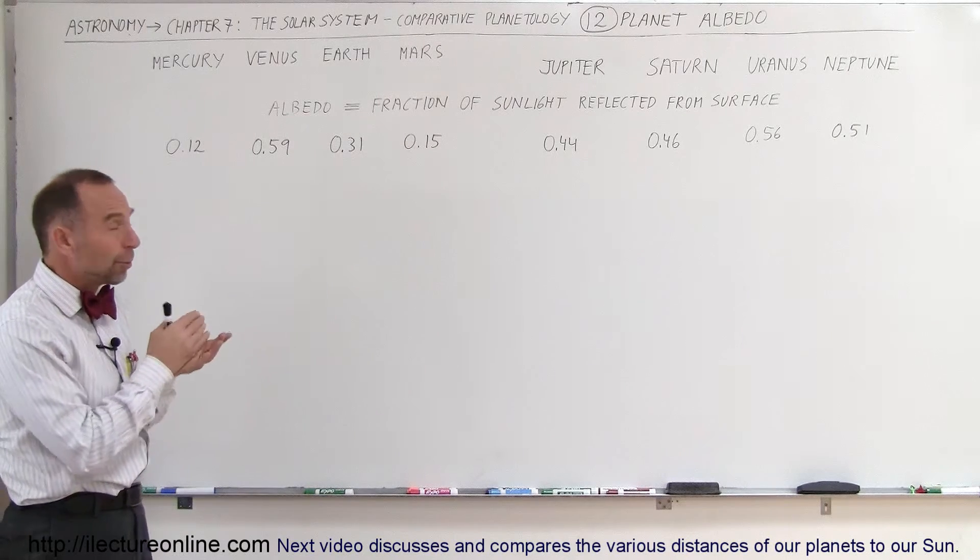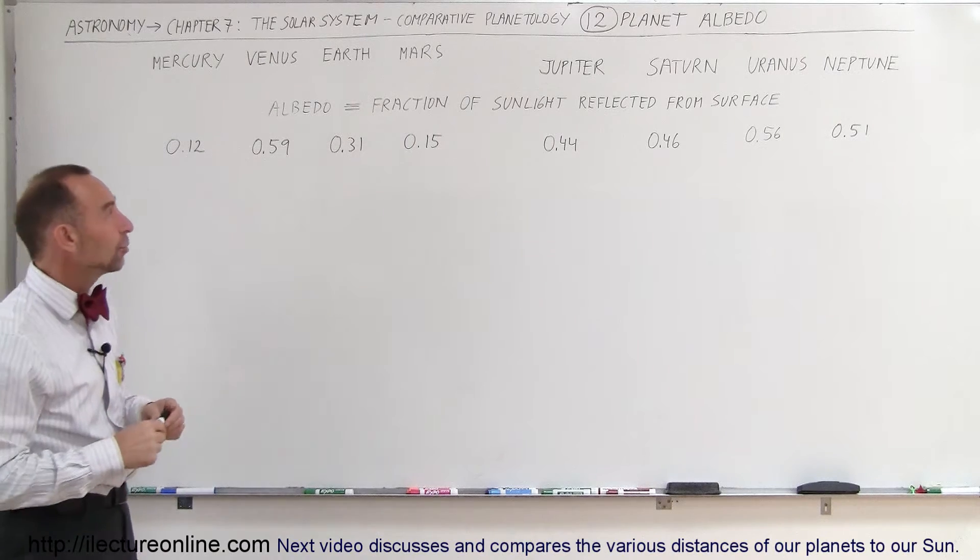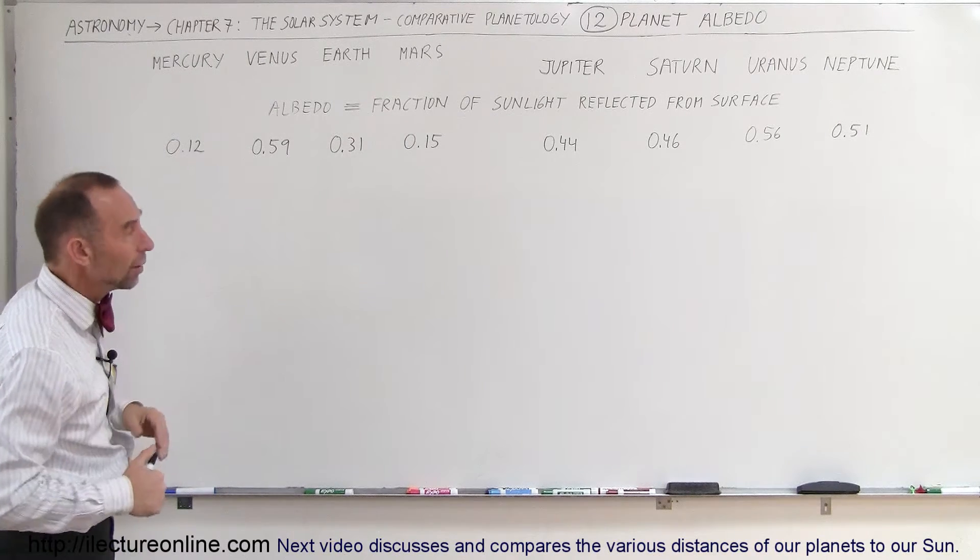The number represents the fraction of the incoming sunlight that actually reflected back into space. So here you have numbers between 0 and 1.